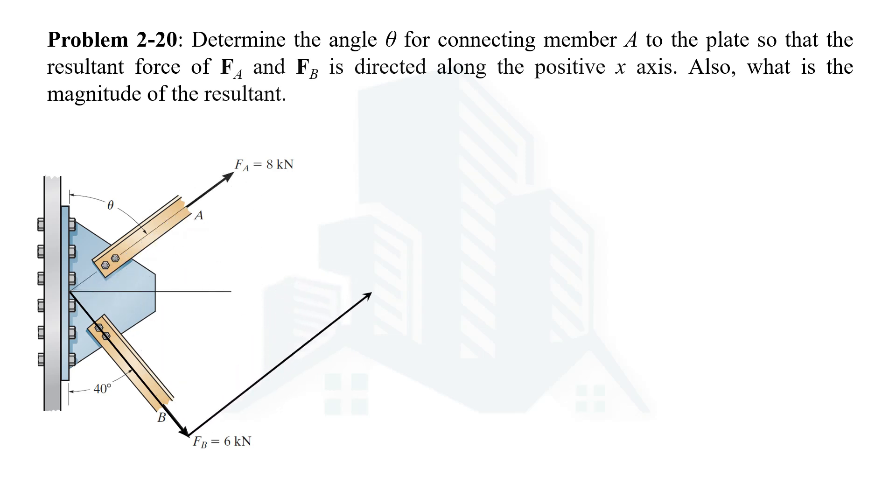By taking the tail of FA force with the head of FB force, by doing so the closing side will then be the resultant. This side is FB, this side is FA, and this side is FR.